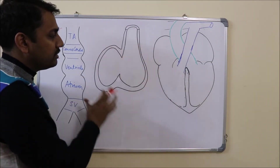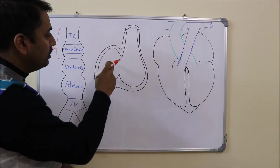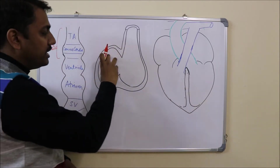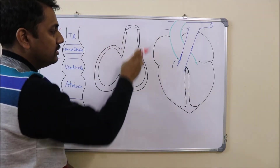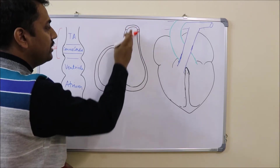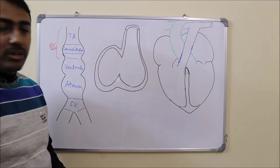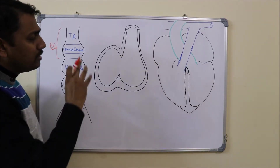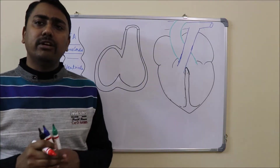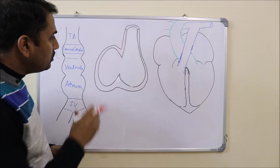We are looking at the heart tube from the lateral aspect. When the heart folds, we can see the atrium, the ventricle part, and the developing bulbus cordis region of the heart tube. Now we need to focus on the interventricular septum and the conotruncal septum.